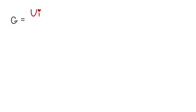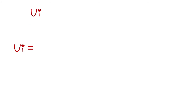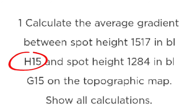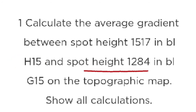Firstly, if you are not given the formula you must write it down: G equals VI over HE. Next you need to calculate your vertical interval. You are given spot height 1517 in block H15 and spot height 1284 in block G15. Check which is the bigger number and which is the smaller number, then subtract the smaller from the bigger.